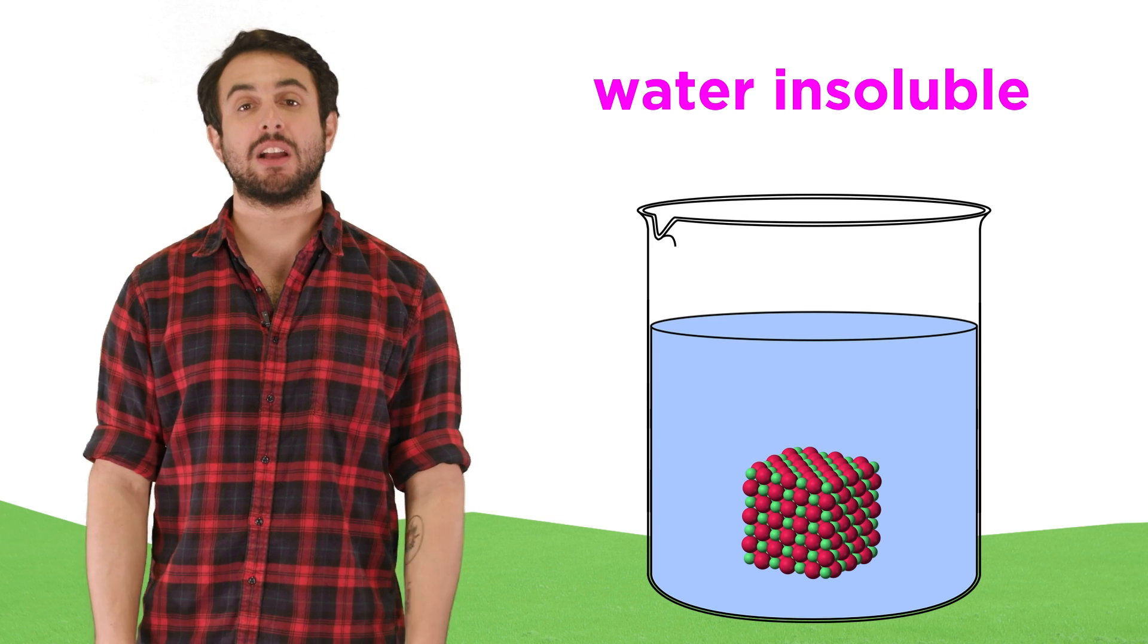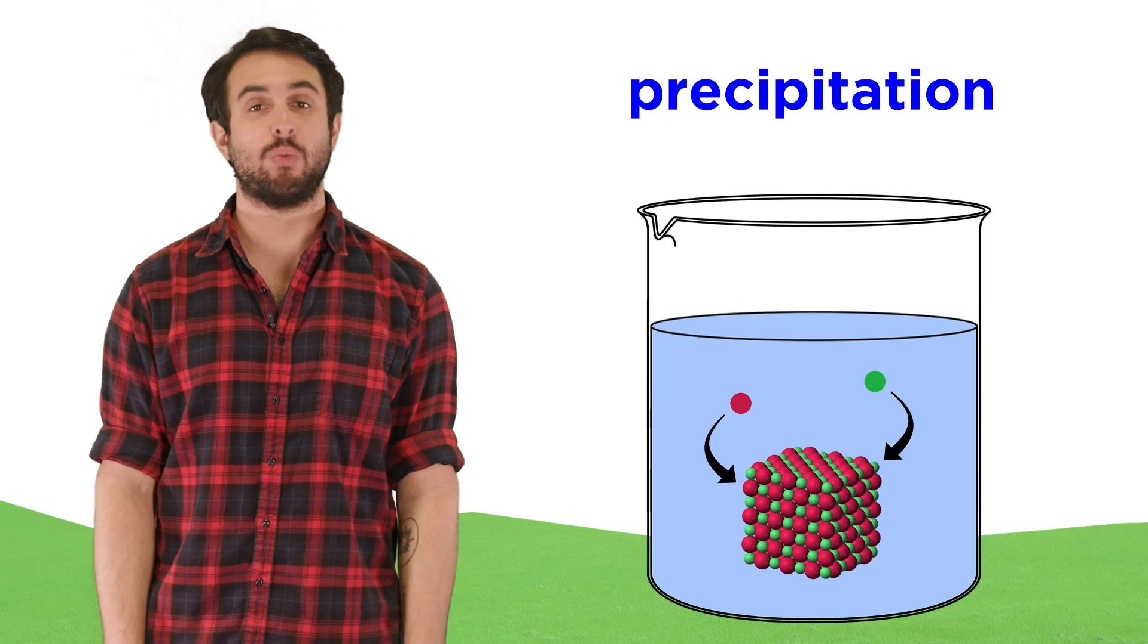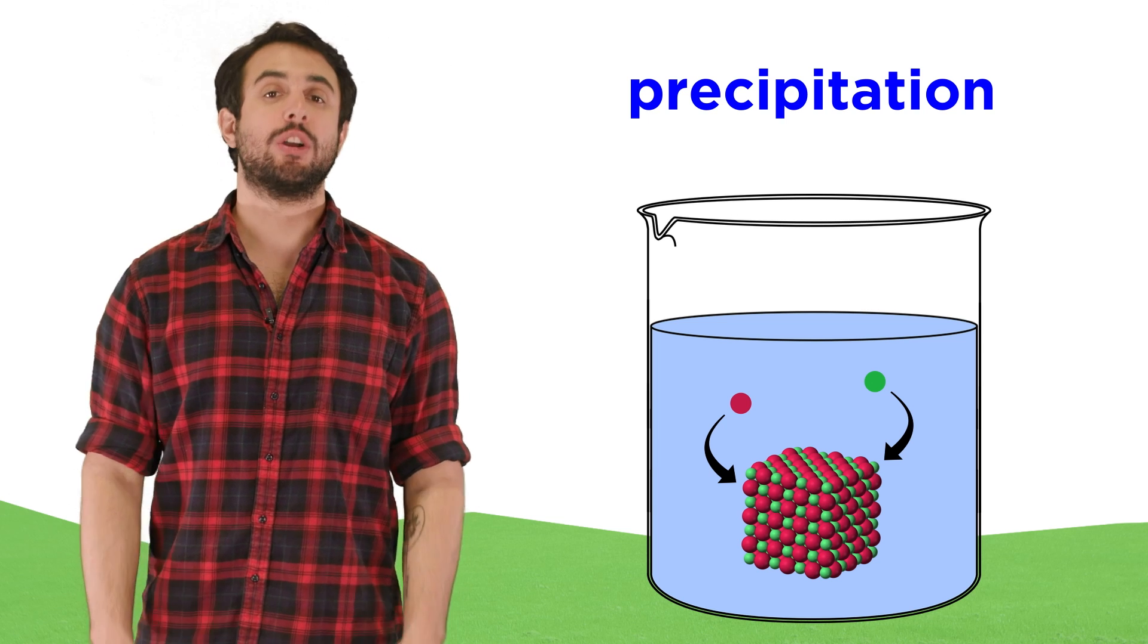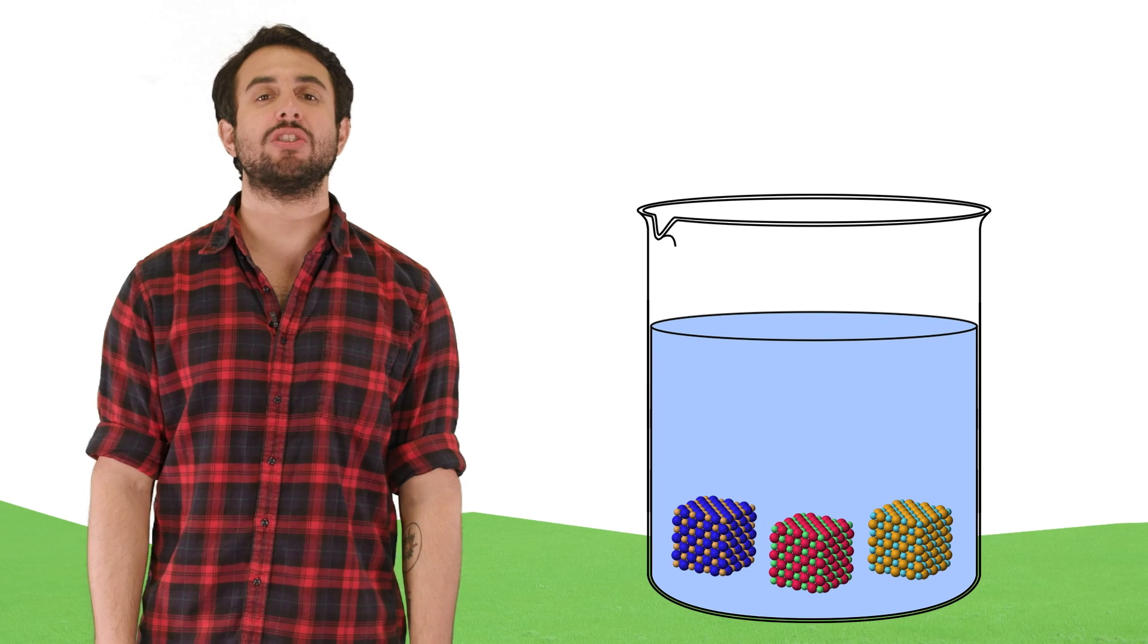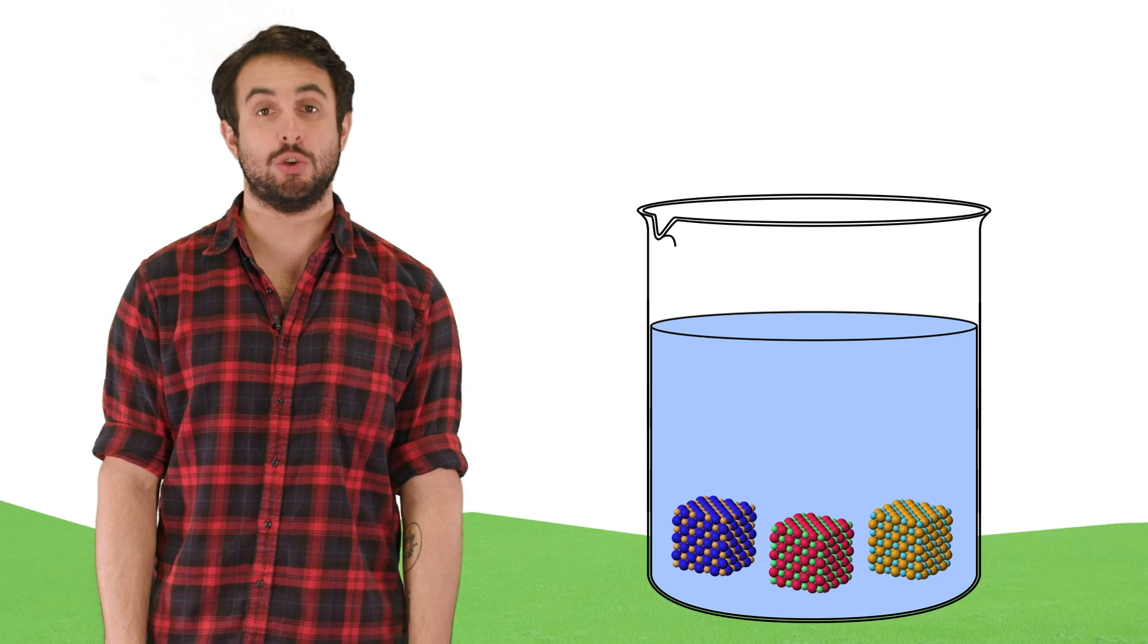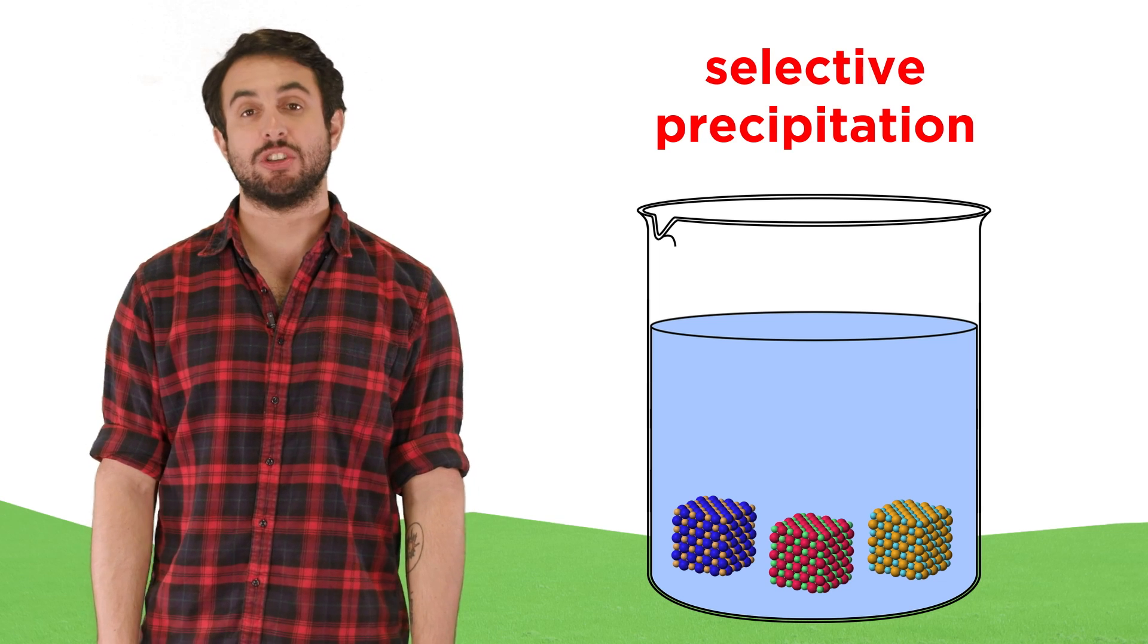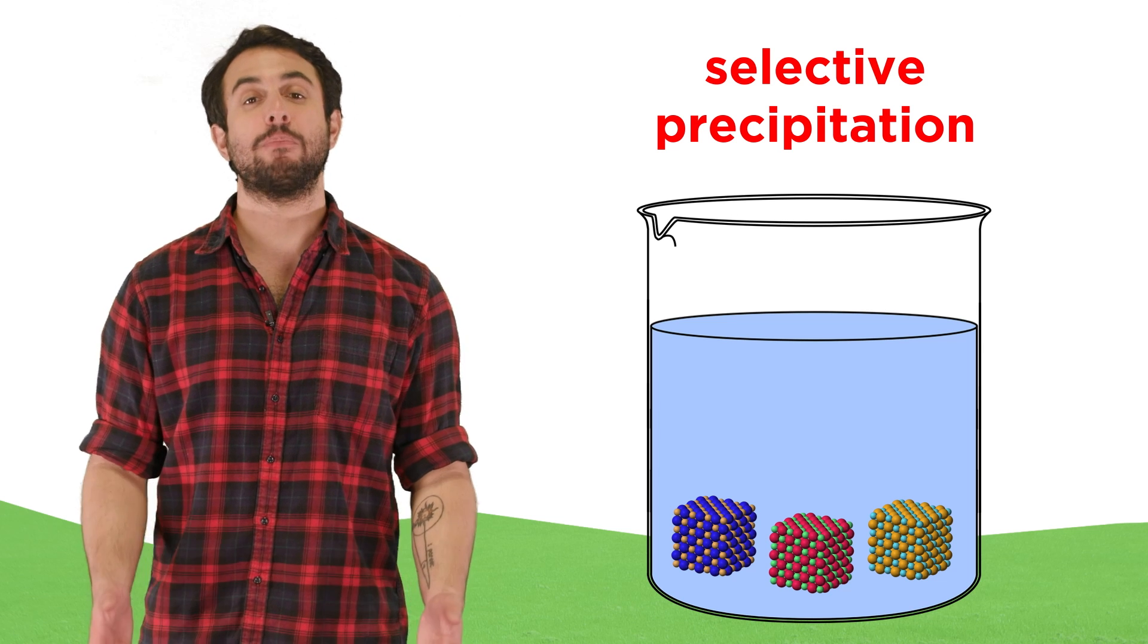We've learned quite a bit about ionic compounds that are water insoluble, and we know that certain ions, when in saturated solution, will combine to form a solid precipitate. But there are situations when multiple different precipitates could potentially form within a solution. In such situations, we will often observe a phenomenon called selective precipitation.